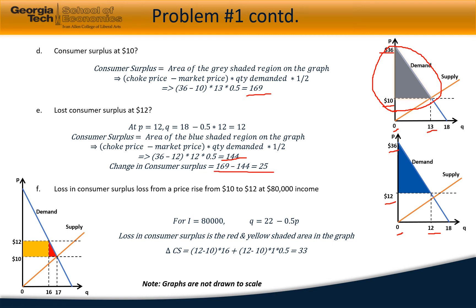Now if the price rises from $10 to $12 and income becomes $80,000, q is 22 minus 0.5p. The loss in consumer surplus due to change in price from $10 to $12 is the yellow plus red region graphically, which is a triangle plus a rectangle, and can be computed as 33.